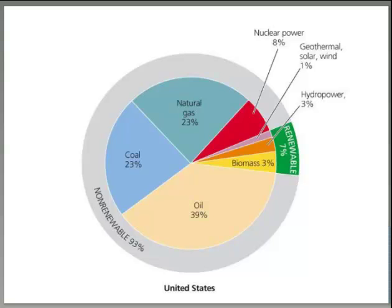Looking at the United States as a more developed country example, 93% of our energy sources are non-renewable. Close to 40% comes from oil alone. So our economy and lifestyle is built around non-renewable energy sources, which by definition makes it non-sustainable. At some point, because oil and coal are non-renewable resources, they will become diminished and depleted. When they get depleted, there won't be enough to go around and we can no longer live that lifestyle.